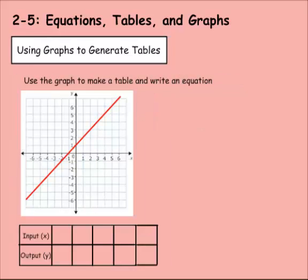Now let's use this graph to make a table. Then we'll write an equation as well. So for the inputs, let's do zero, we'll do one, two, three, and then four. So when the input is zero, our output is one. When the input is one, the output is two. When the input is two, the output is three. When the input is three, the output is four. When the input is four, the output is five.